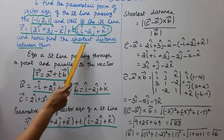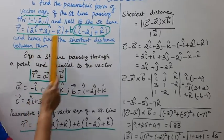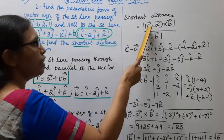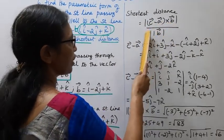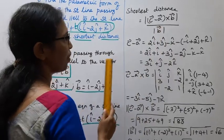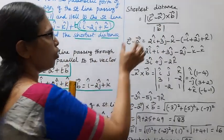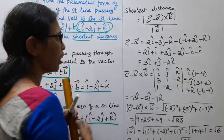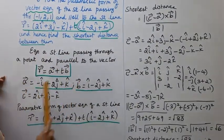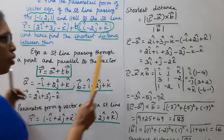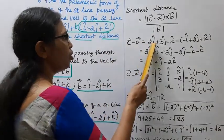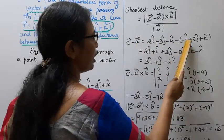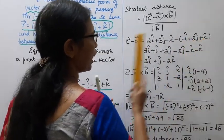Now we find the shortest distance between them. The shortest distance formula is: modulus of (c vector minus a vector) cross b vector, divided by modulus of b vector. First, finding c vector minus a vector: (2i-cap plus 3j-cap minus k-cap) minus (minus i-cap plus 2j-cap plus k-cap).